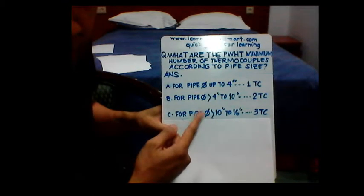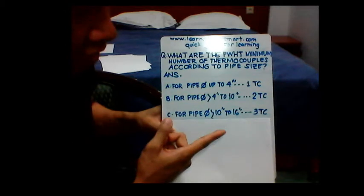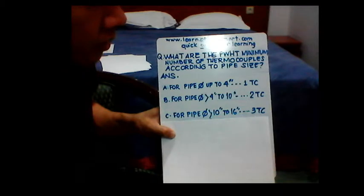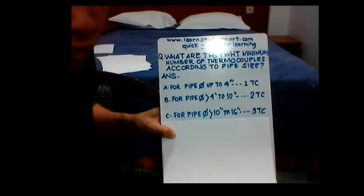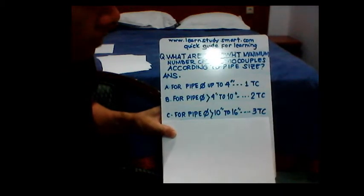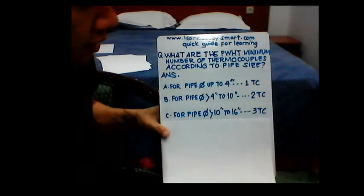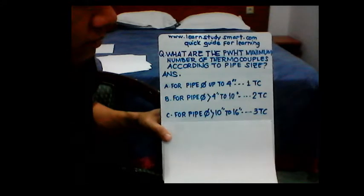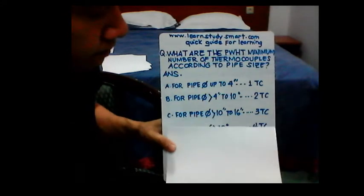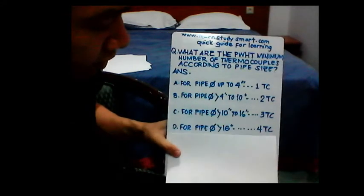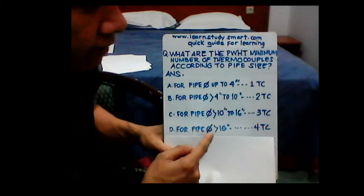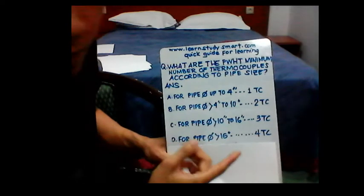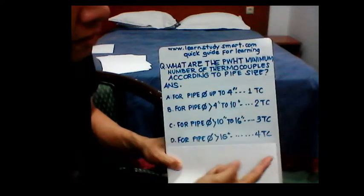For letter C, pipe diameter greater than 10 inches to 16 inches, a minimum of three thermocouples must be used to check the temperature of the pipe weld. For letter D, pipe diameter greater than 16 inches, you have a minimum of four thermocouples.